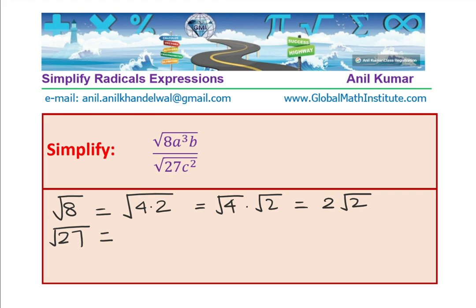So, 27 is what? 3 times 3 times 3. That is 3². So, we have a perfect square which is 9 and 9 times 3 is 27. And therefore, I could write this as square root of 9 times square root of 3.